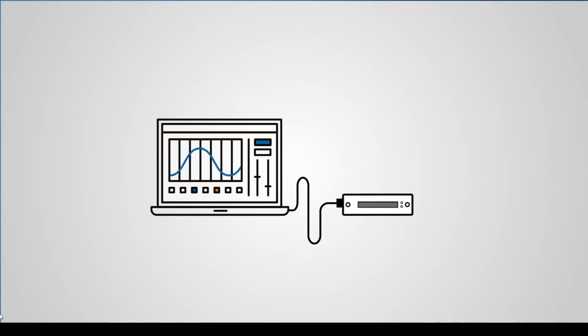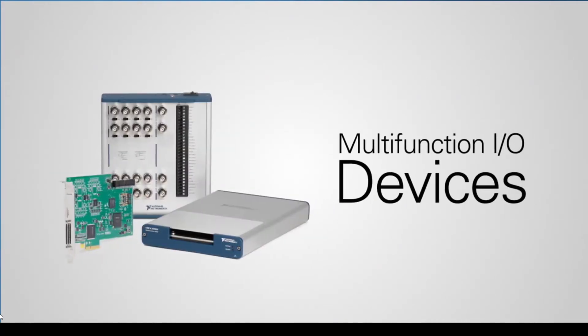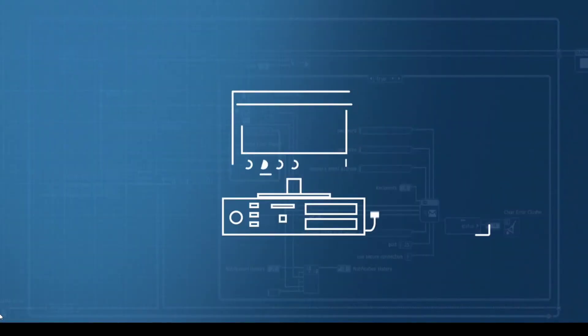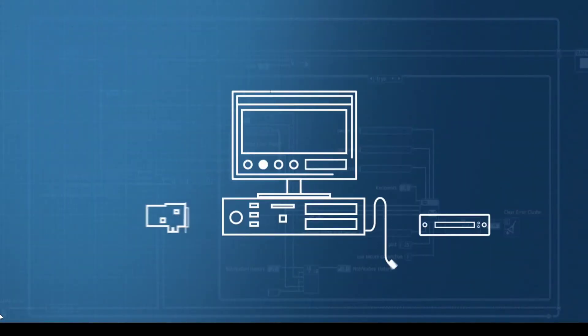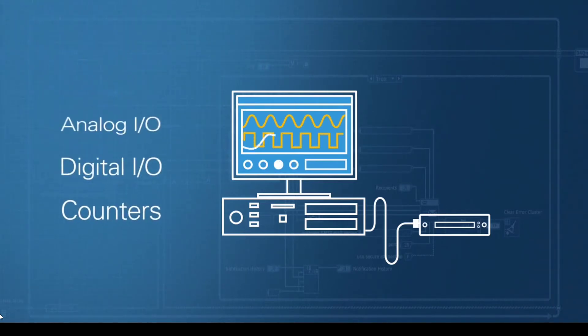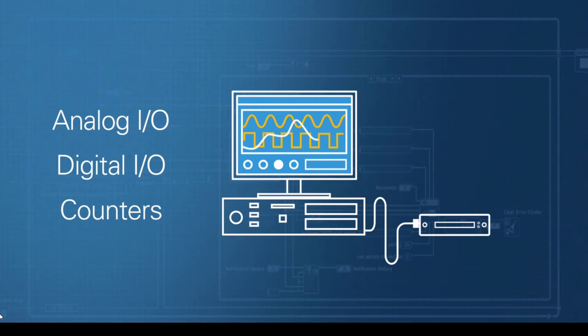There are two main options for hardware. The first is multifunction I/O devices, which directly connect to your computer via USB or PCI. They provide a good solution for small to medium channel count applications with a standard I/O mix.